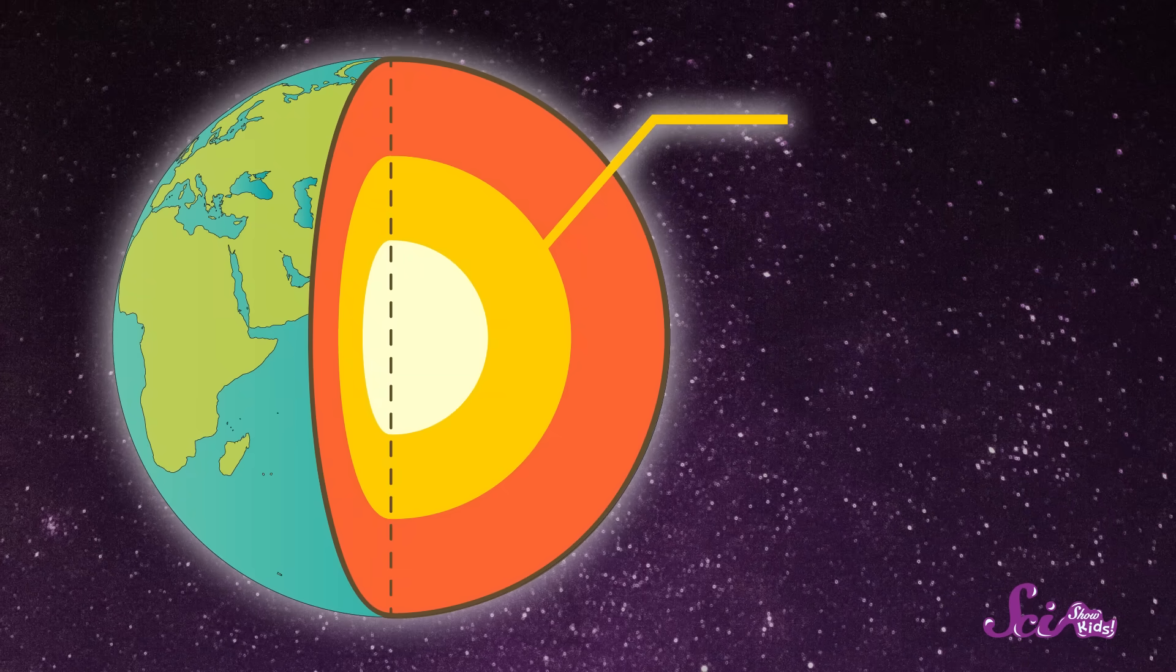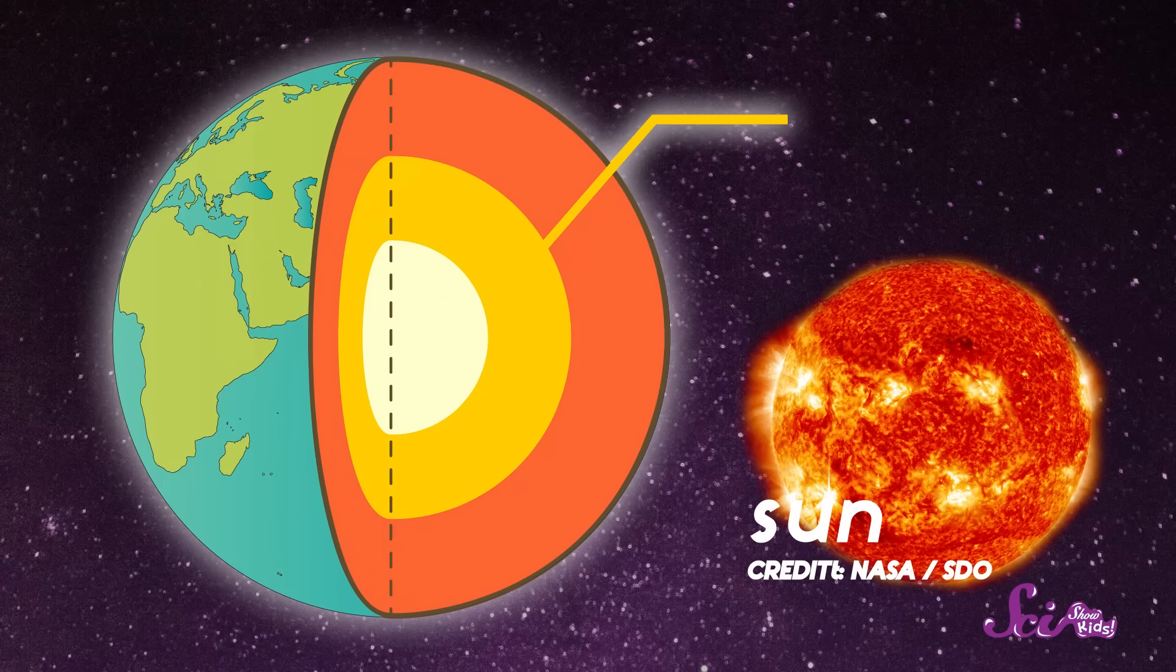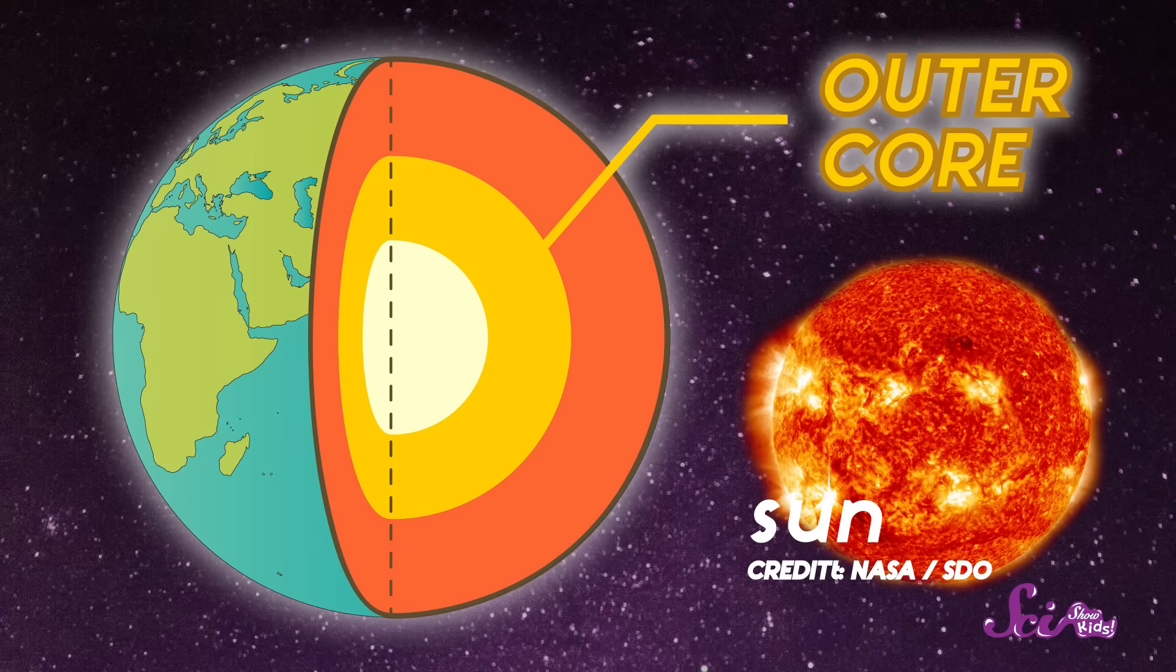This next layer down is between 4,000 and 6,000 degrees Celsius. That's just about as hot as the surface of the sun. This layer, called the outer core, is so hot that it's totally liquid, even though it's made of rock.